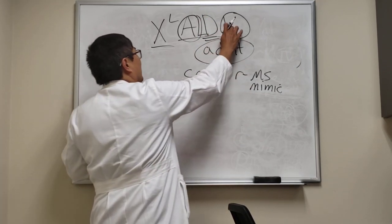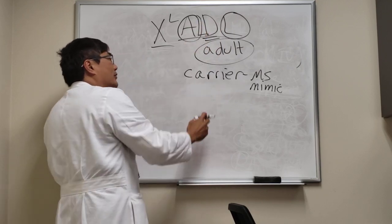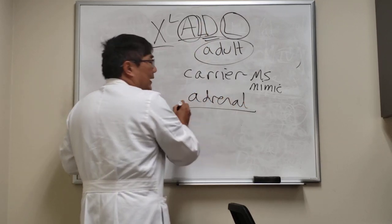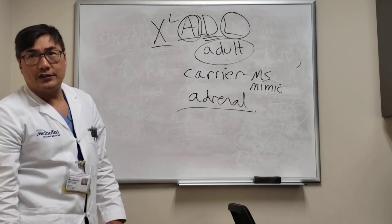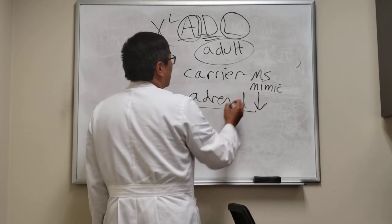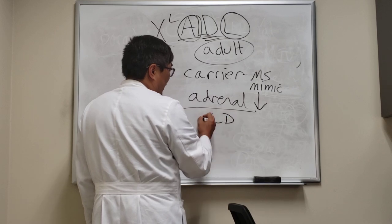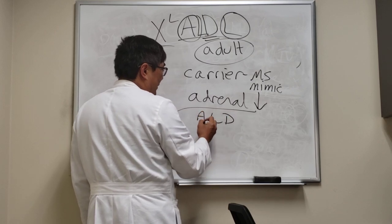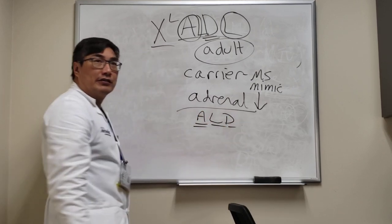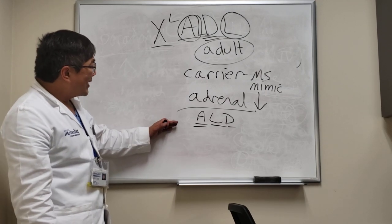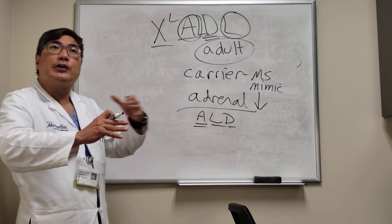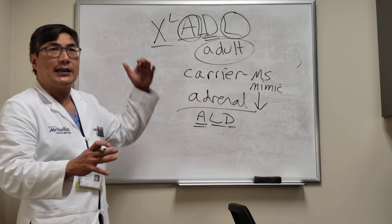It's called adrenoleukodystrophy because the adrenal gland can be affected, causing adrenal insufficiency. The combination of adrenal insufficiency and the leukodystrophy is what defines it. The MRI scan shows multifocal white matter lesions, and patients have multiple recurrent neurologic symptoms and signs.